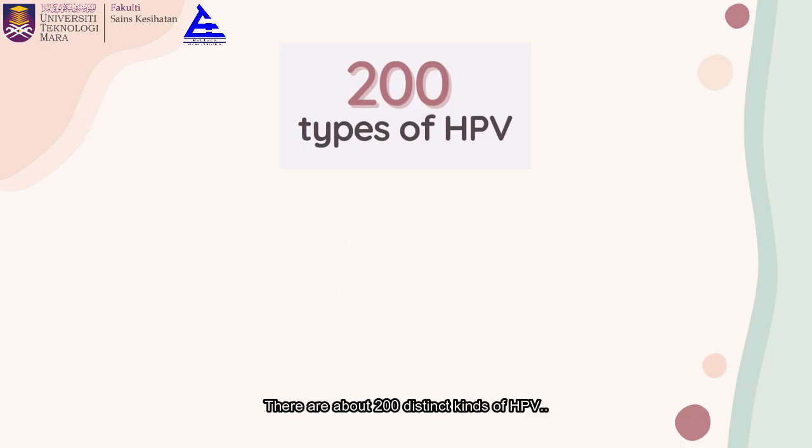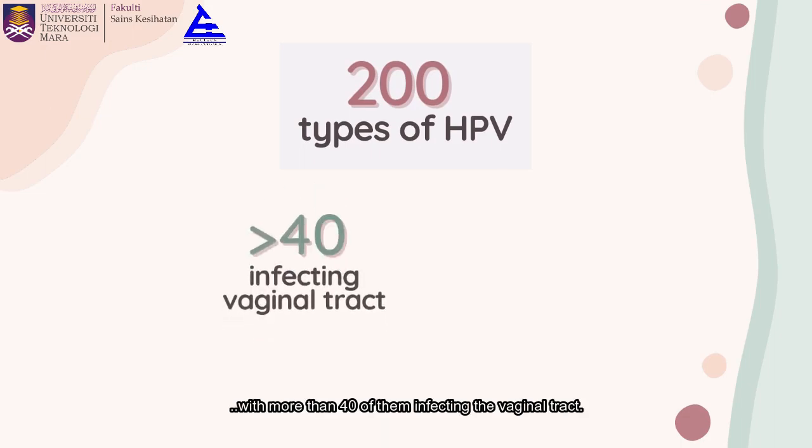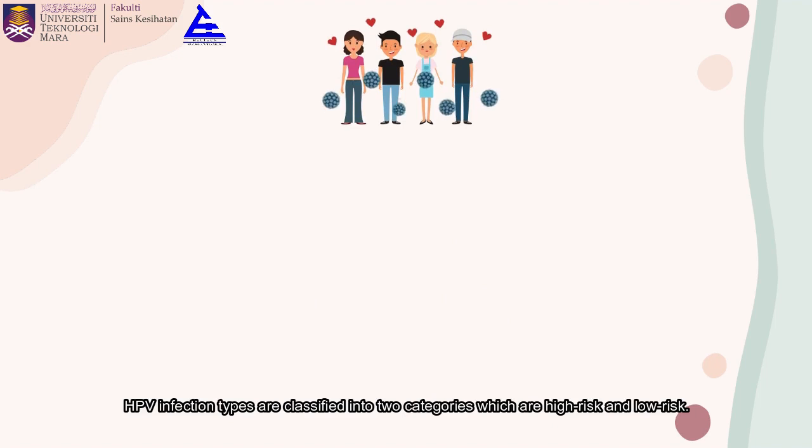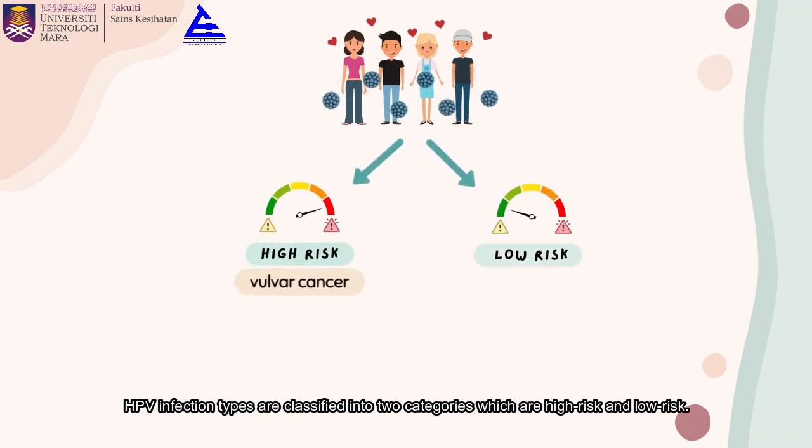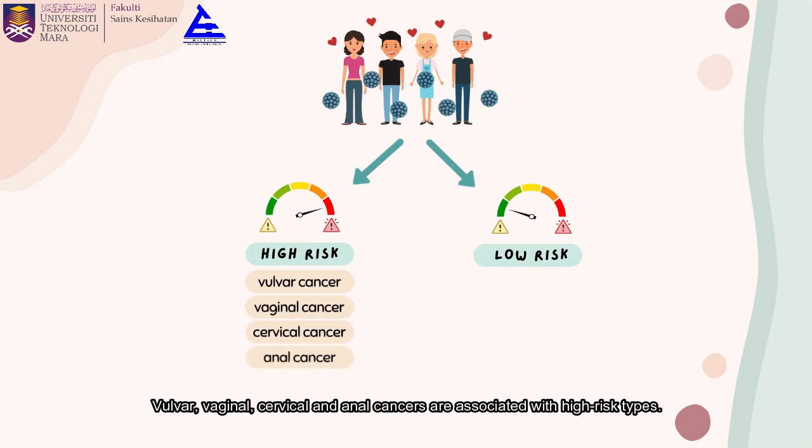There are about 200 distinct kinds of HPV, with more than 40 of them infecting the genital tract. HPV infection types are classified into two categories: high-risk and low-risk. Vulvar, vaginal, cervical, and anal cancers are associated with high-risk types. Low-risk types, on the other hand, are associated with genital warts.